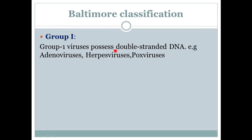The first group — Group 1 viruses possess double-stranded DNA. Group 1 viruses have or contain double-stranded DNA. 'Possess' means to have or to hold. Examples in this group include adenoviruses, herpes viruses, and pox viruses.